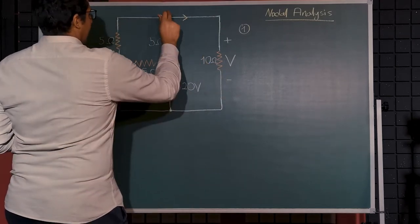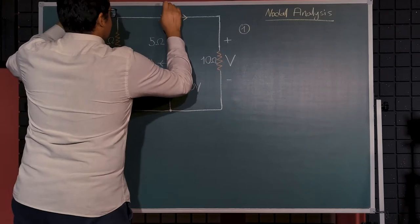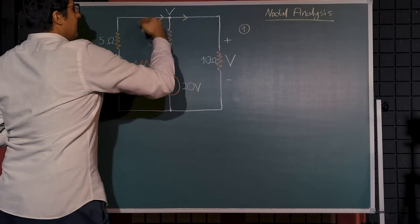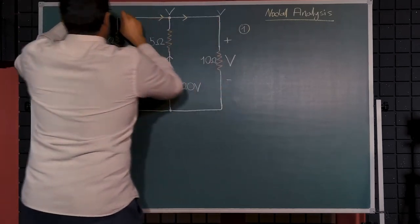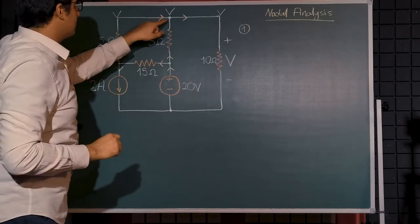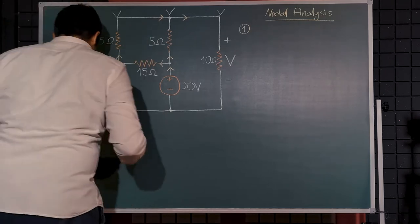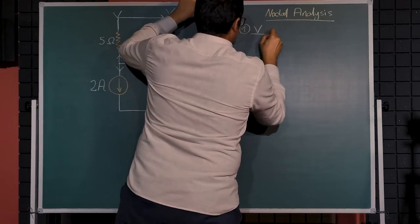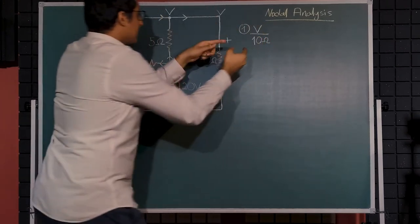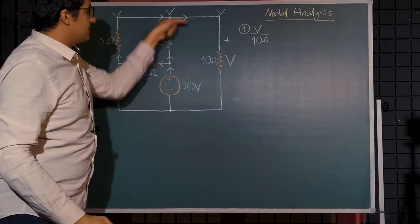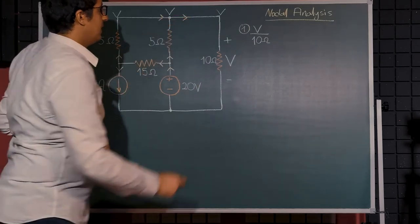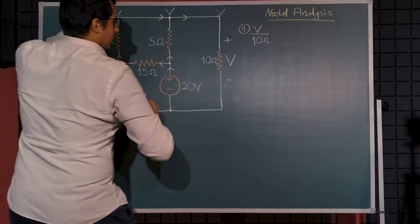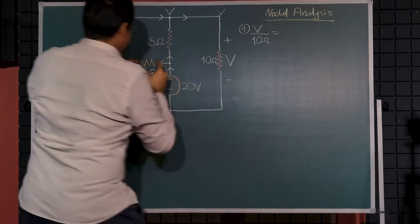The question actually asks for v, so we will write a nodal equation at this node. Now let's say the voltage at this node is v, and this whole branch is actually voltage v. Now according to our assumption, we can say v over 10 ohms, this is the current that flows in this direction, will be equal to the sum of these two currents.